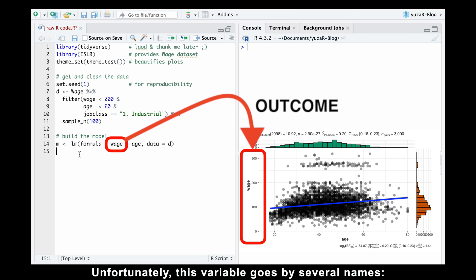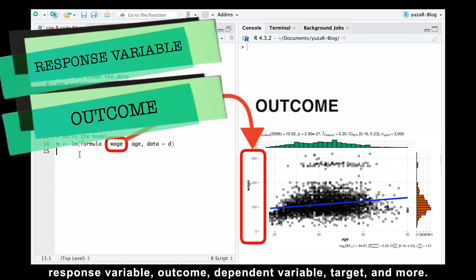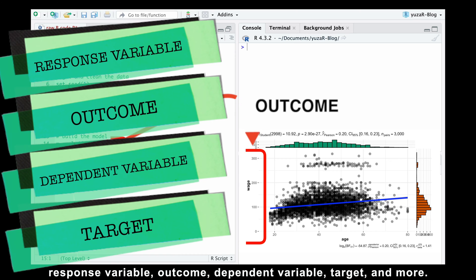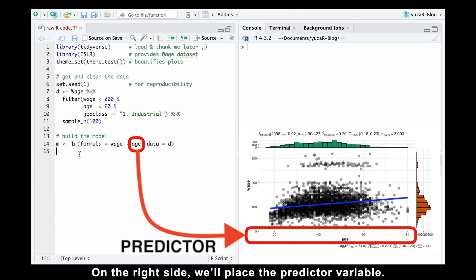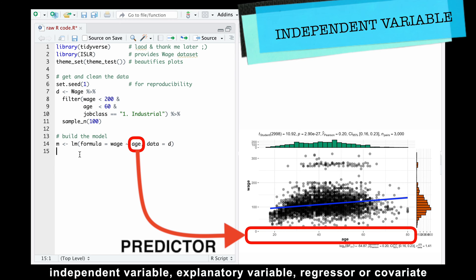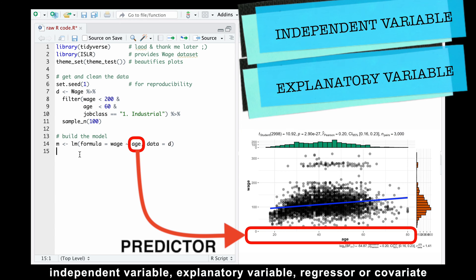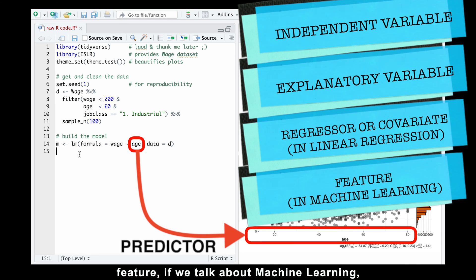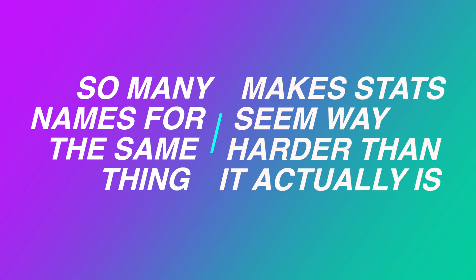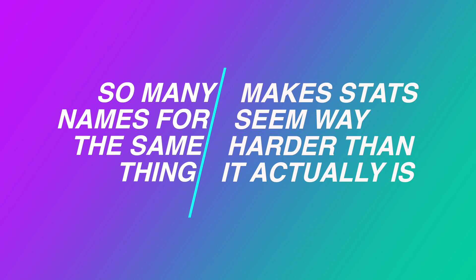Unfortunately, this variable goes by several names: response variable, outcome, dependent variable, target, and more. It can get really confusing. On the right side, we'll place the predictor variable. Predictors also have various synonyms: independent variable, explanatory variable, regressor or covariate if we talk about linear regression, feature if we talk about machine learning, and even risk factor in epidemiology. So many names for the same thing make stats seem way harder than it actually is.